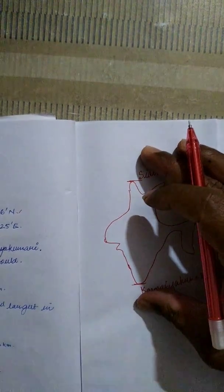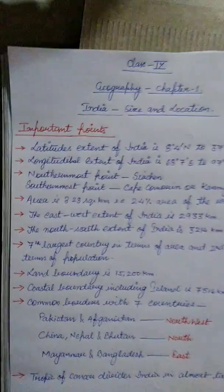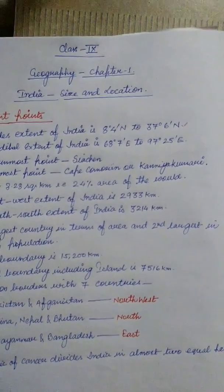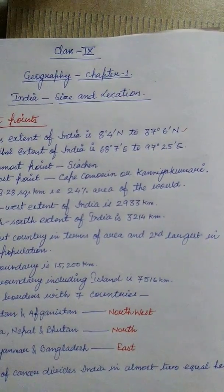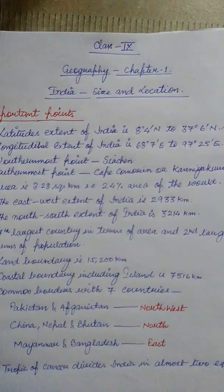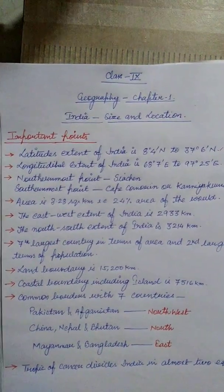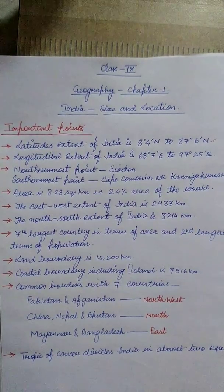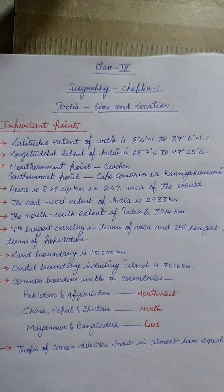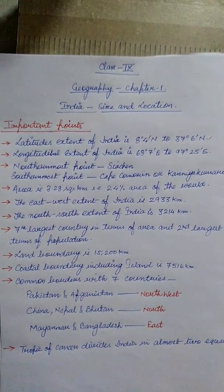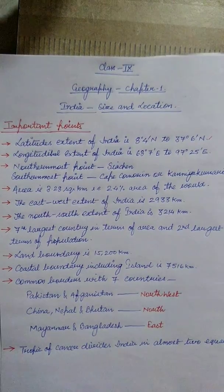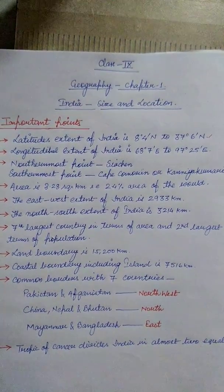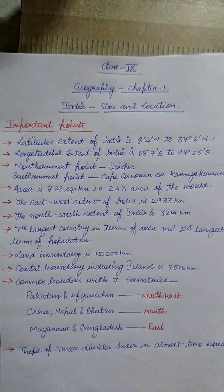The next point is area. The area of India is 3.28 million square kilometers. Of whatever land surface we have on Earth, India accounts for 2.4 percent of the total area of the world.